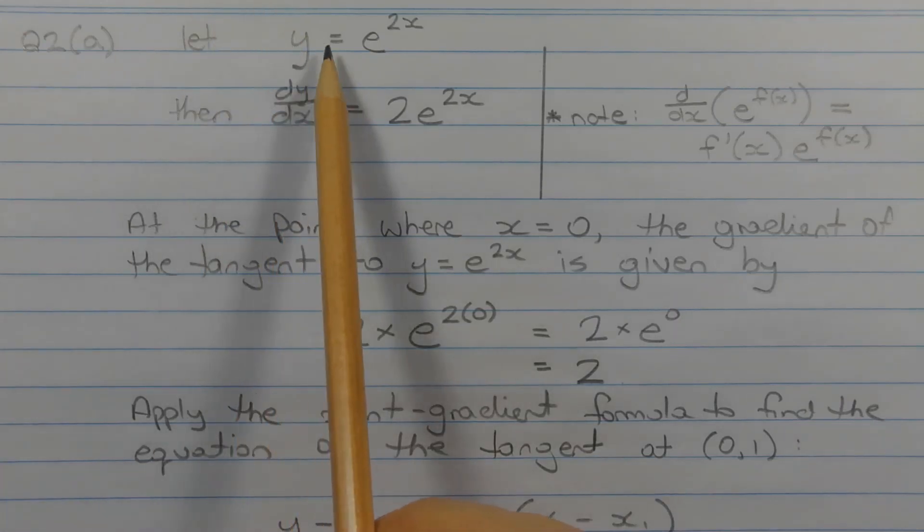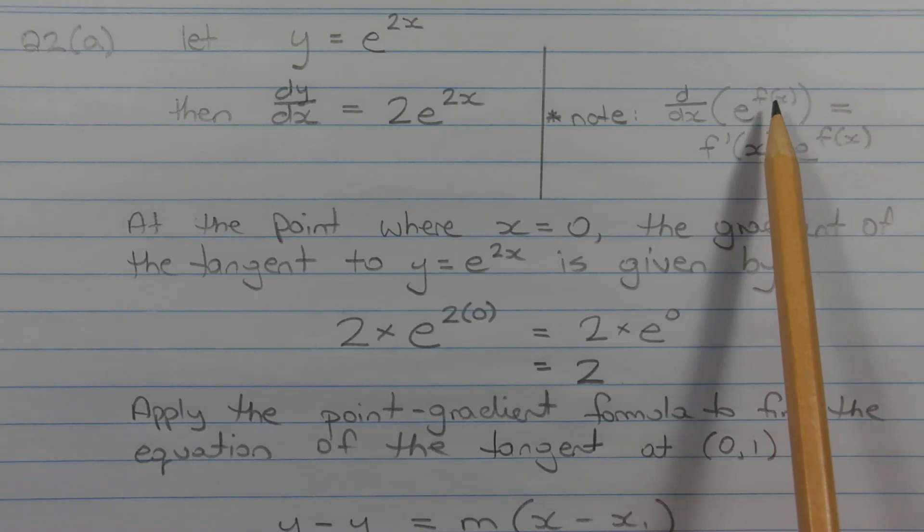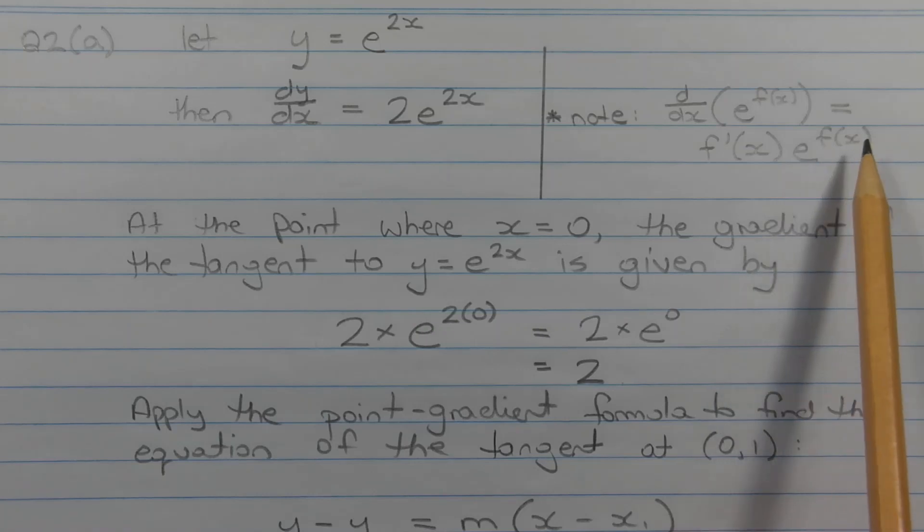Starting with y = e^(2x), this function is an exponential in the form e^(f(x)), and the derivative is found by f'(x) times e^(f(x)).